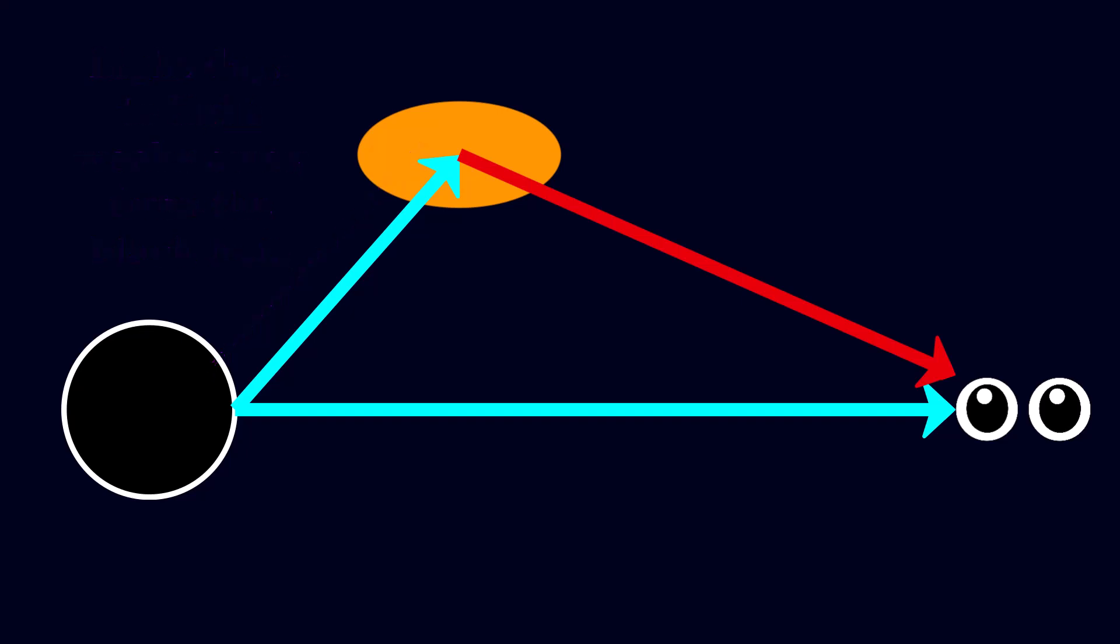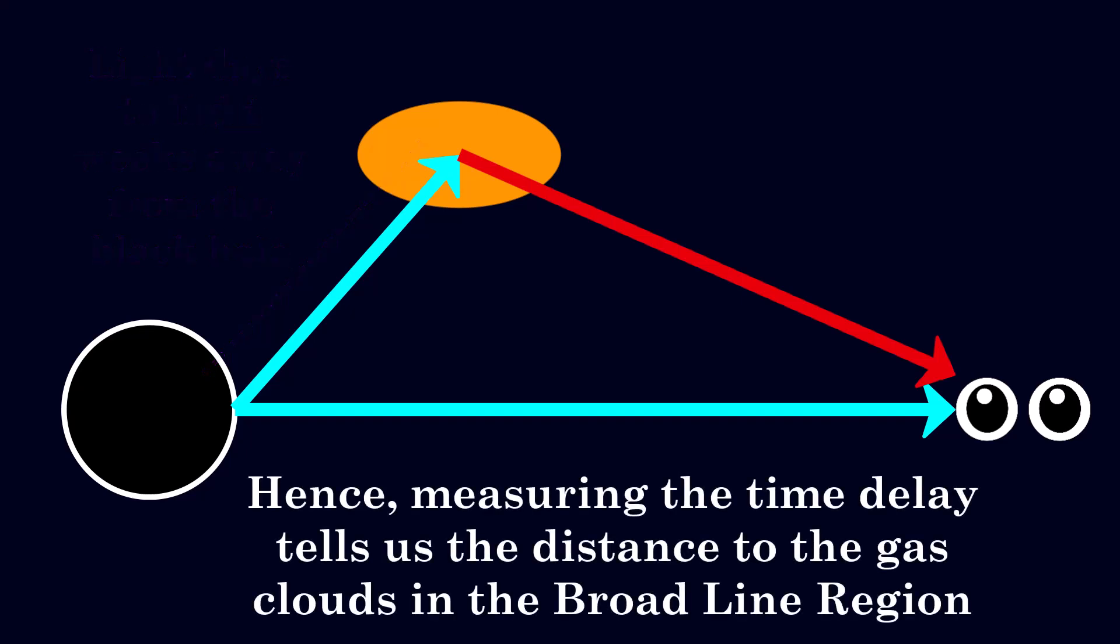Therefore, if we measure this time delay or time lag between seeing a variation in the continuum emission of the AGN to seeing the corresponding change in the emission of the broad line region, we can use this to estimate the size of the broad line region, since we know the speed of light is constant, and since the time lag is due to the light having to travel from the central supermassive black hole to the broad line region.